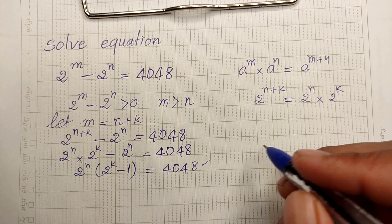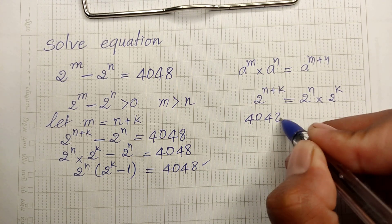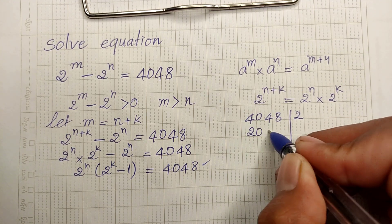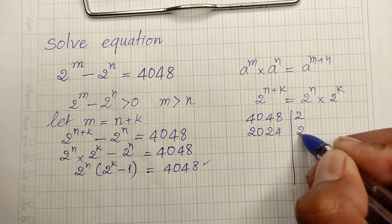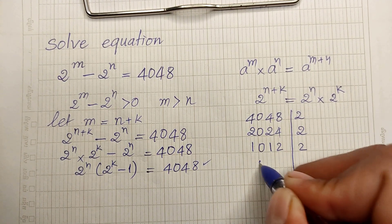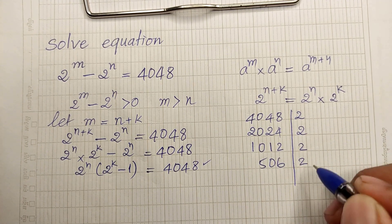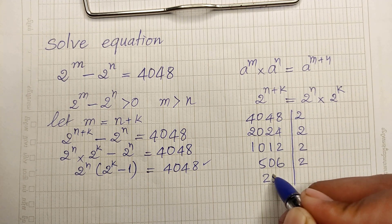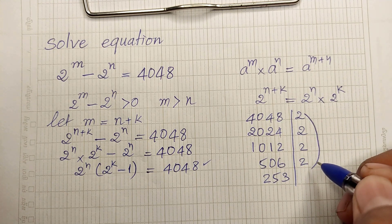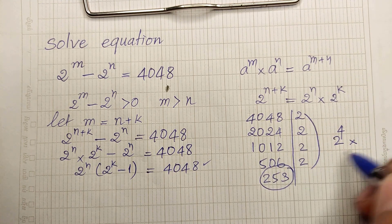We divide 4048 by 2 to get 2024, divide by 2 to get 1012, divide by 2 to get 506, divide by 2 to get 253. So 4048 equals 2 to the power 4 multiplied by 253.